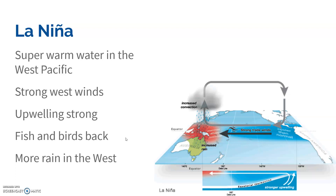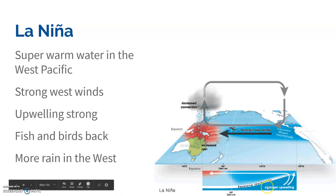La Niña is like a pendulum swinging back, but swinging back way too far — it overcorrects. As that oscillation swings back, we have super strong winds blowing off South America, pushing all that hot water toward the west. So we have a lot more rain in the west, even stronger upwelling, and it's cooler and drier than normal on the east side. The phytoplankton and fish populations come back.